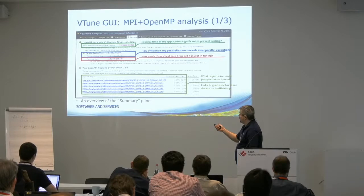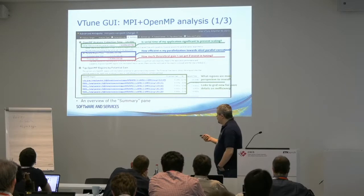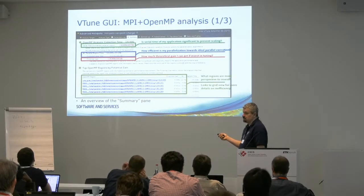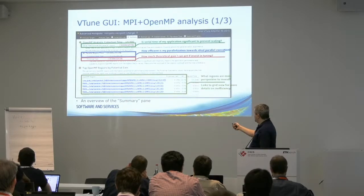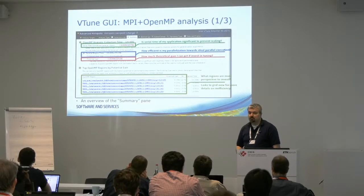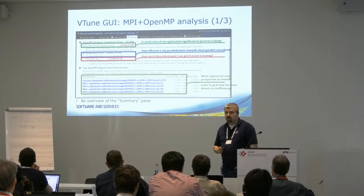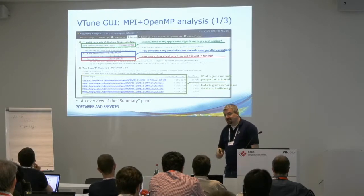The tool also lists hotspots not just in terms of functions or loops but also in terms of individual OpenMP regions in your code — where it is in your code, what is the potential gain, and how long it took to execute that parallel region. You can focus on the low-hanging fruit in terms of OpenMP optimization, so you don't have to optimize all your OpenMP regions, just the ones where you can actually get benefit.